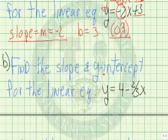Next, let's find the slope and y-intercept for the linear equation y equals 4 minus 2 thirds x. You will notice that it's written backwards so we need to write negative 2 thirds x and there's no sign in front of the 4 so we assume it's to be positive.